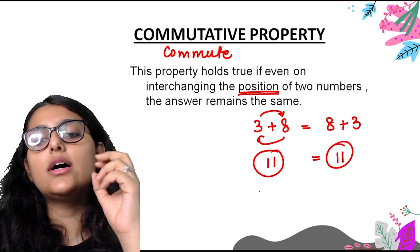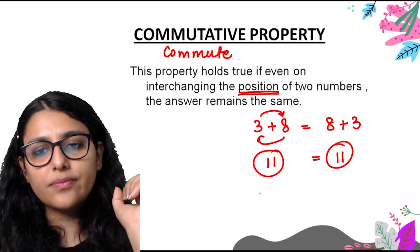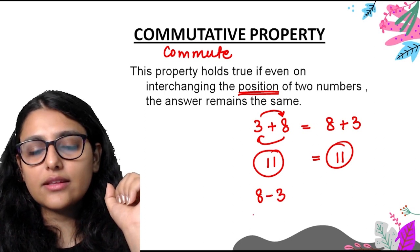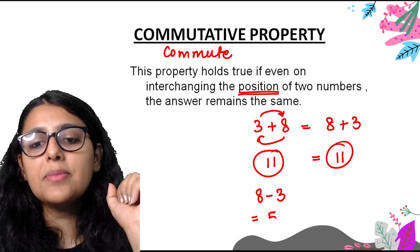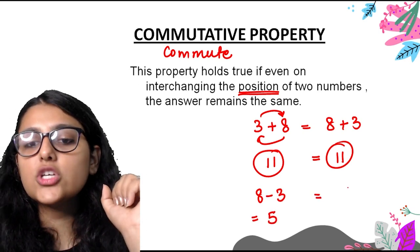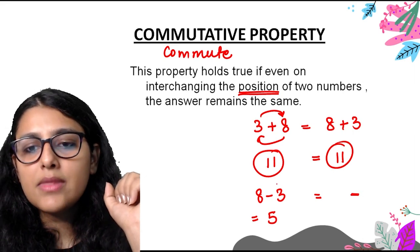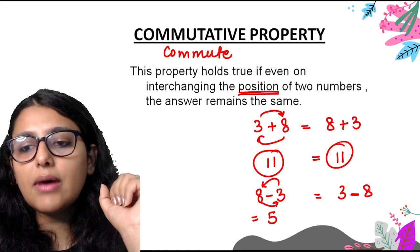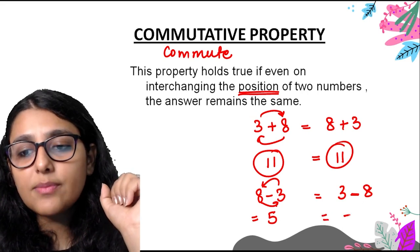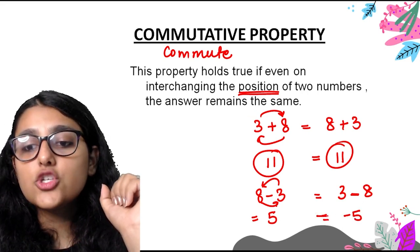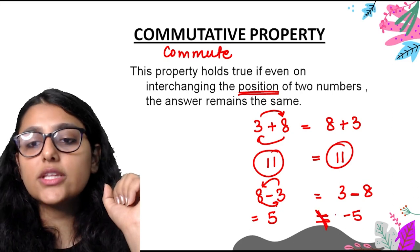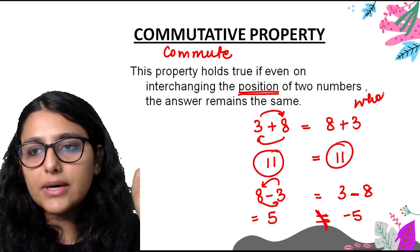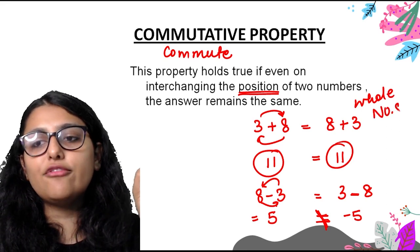For subtraction of whole numbers: 8 minus 3 equals 5. But if we interchange, we get 3 minus 8 equals minus 5. These are not equal, so the commutative property does not hold for subtraction of whole numbers. Now we will check all four operations for integers.